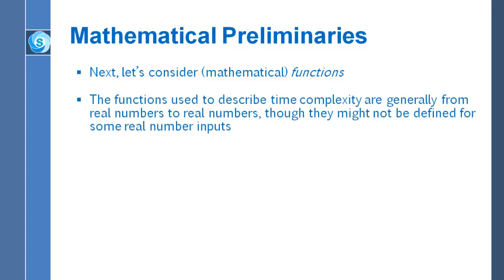As we start analyzing algorithms and focus on time complexity — how long it takes for an algorithm to complete — we're going to be talking quite a bit about functions whose input is a real number and whose output is also a real number. So we say this is a function from real numbers to real numbers. It's important to realize that certain numbers may not be allowed as inputs, so the domain of the function might be restricted. Similarly, you may not get all possible real numbers out, so the range might be just some proper subset of the real numbers.